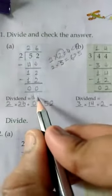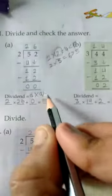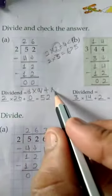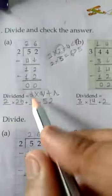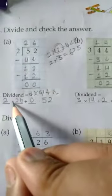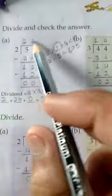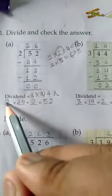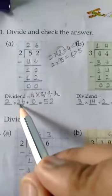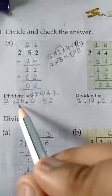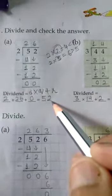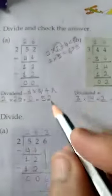Now, to check: dividend equals divisor multiplied by quotient plus remainder. D for divisor, Q for quotient, R for remainder. So divisor is 2, quotient is 26, and remainder is 0. Write: 2 multiplied by 26 plus 0. 26 multiplied by 2 is equal to 52, and 52 plus 0 is equal to 52. So write 52 as the answer. The dividend is 52, so it is correct.